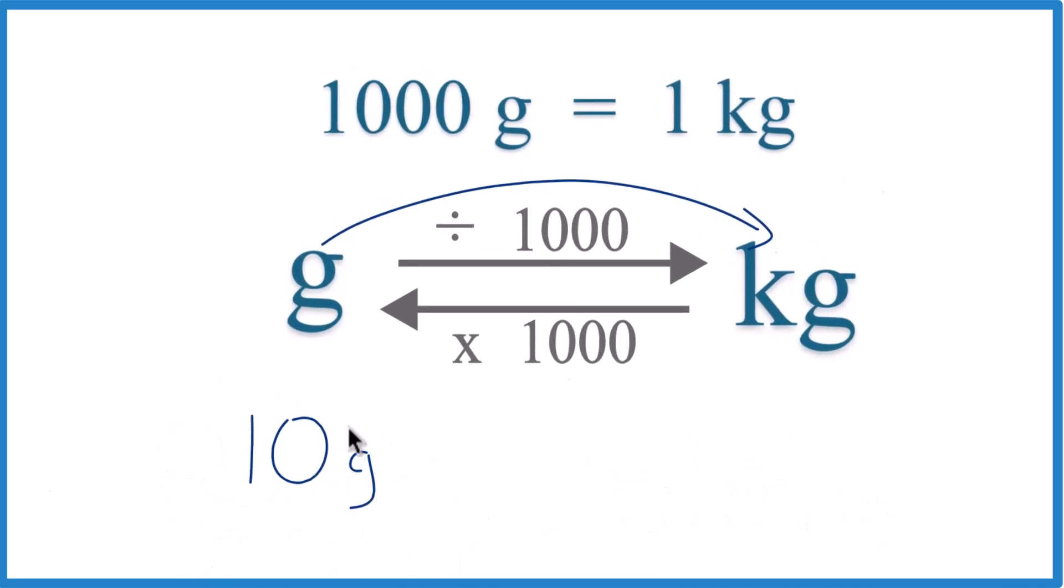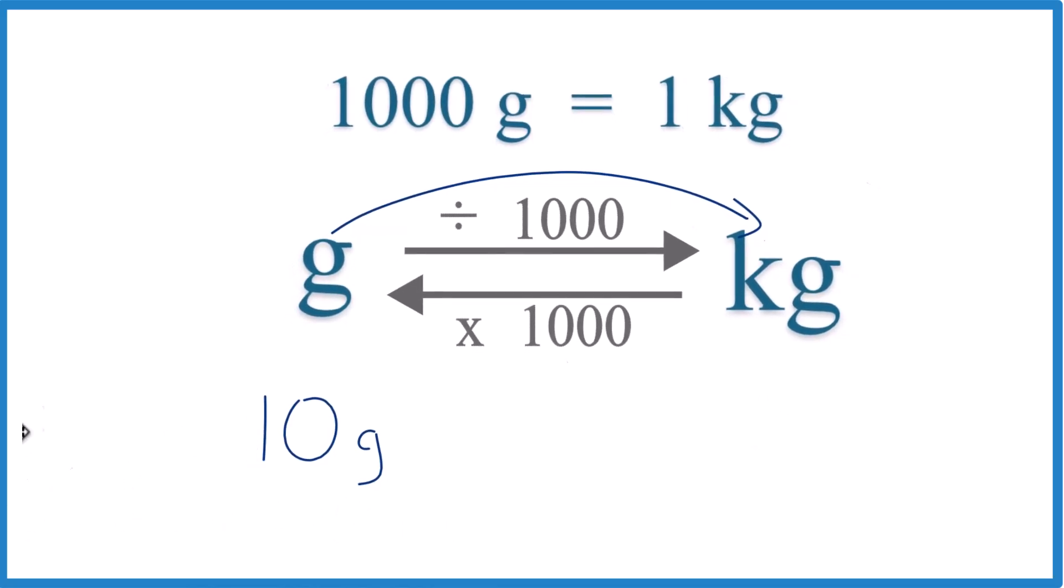Since we have grams on top, when we multiply by a conversion factor, we need grams on the bottom. So we know that 1 kilogram is a thousand grams. That's the conversion factor. So we multiply.